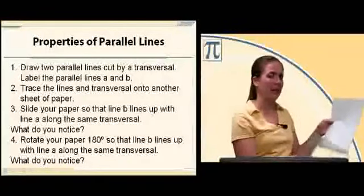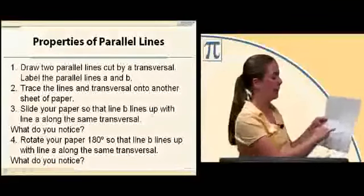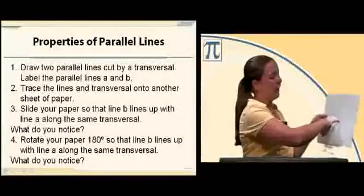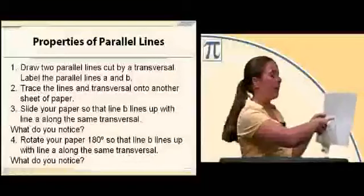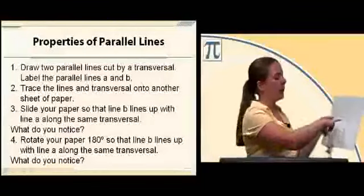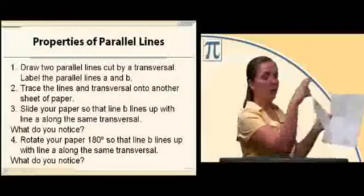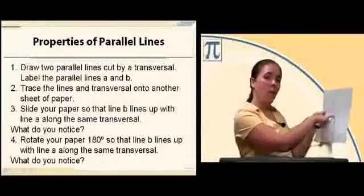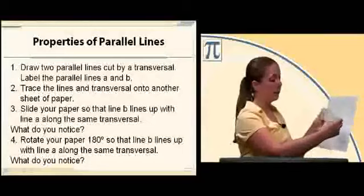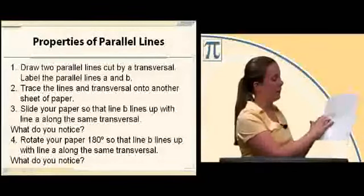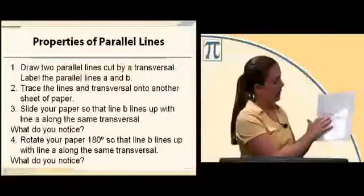My last one said that same side interior angles are supplementary. 4 and 7 are same side—to see if they're supplementary, not congruent—I'm going to take angle 7 on my transparency here. I'm going to slide it next to 4 and see if it makes a straight line. So I've got to get it in the right position, and if I slide it up there,